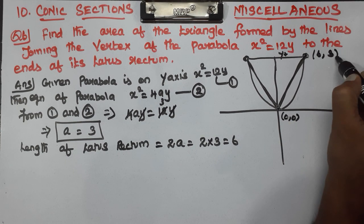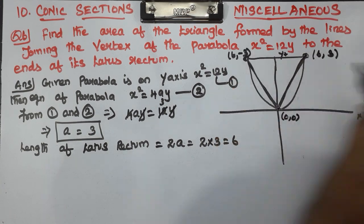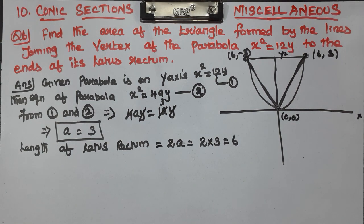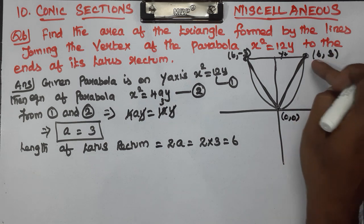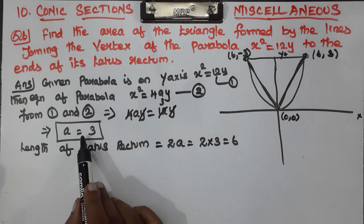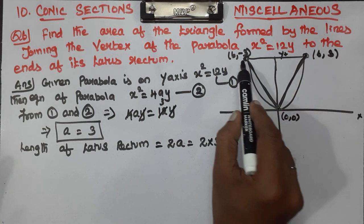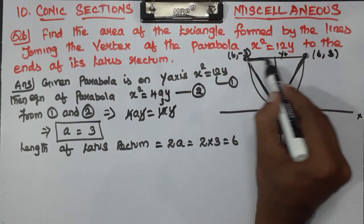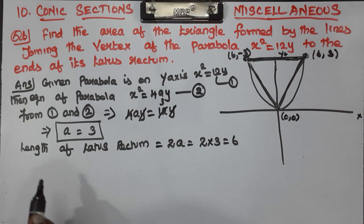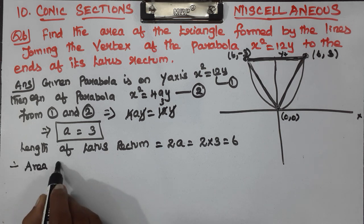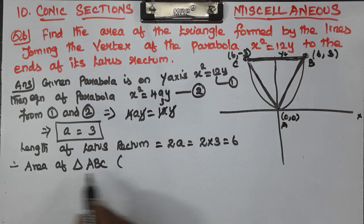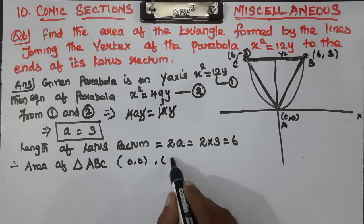Since a = 3, the three points of the triangle are: A = (0, 0) — the vertex — B = (3, 3), and C = (−3, 3). Area of triangle ABC, using the formula with coordinates x1, y1; x2, y2; x3, y3.